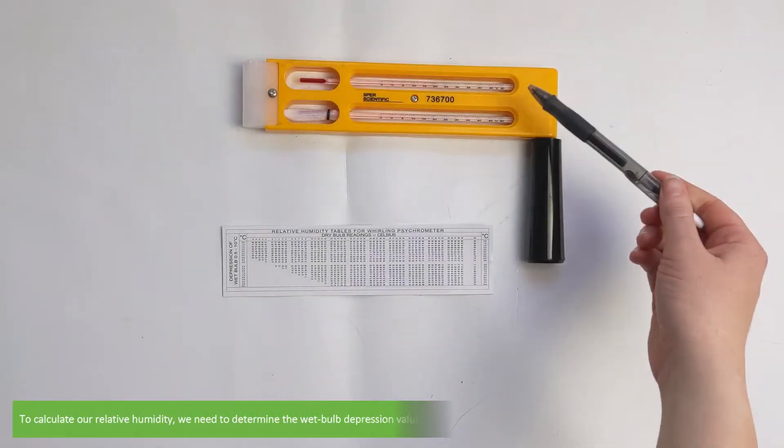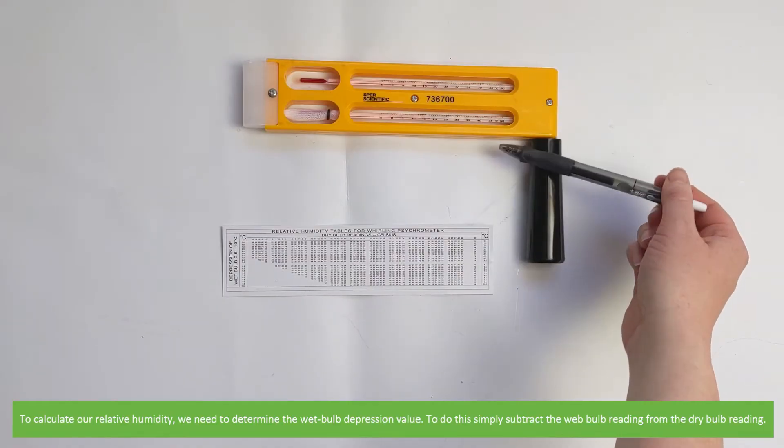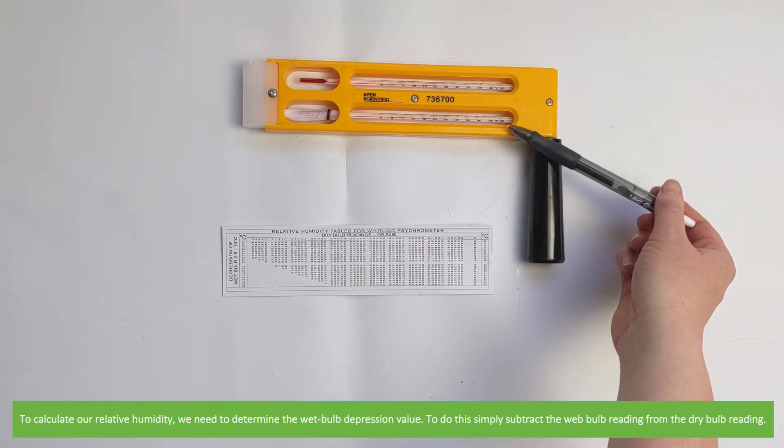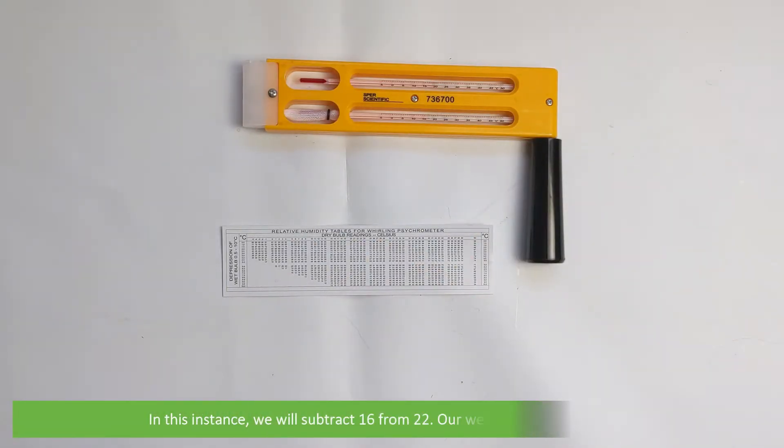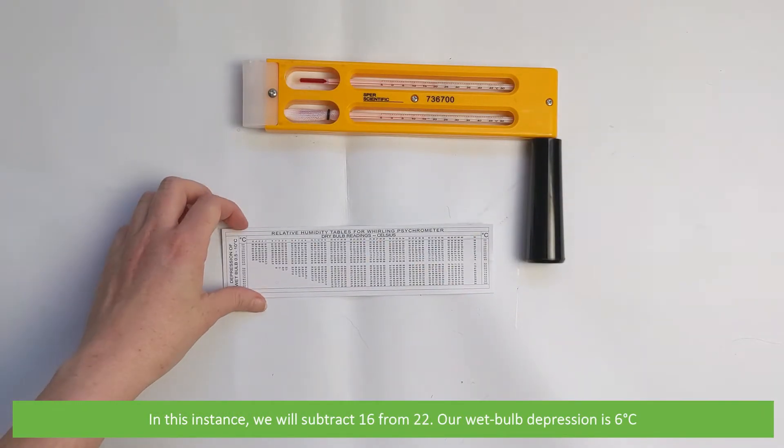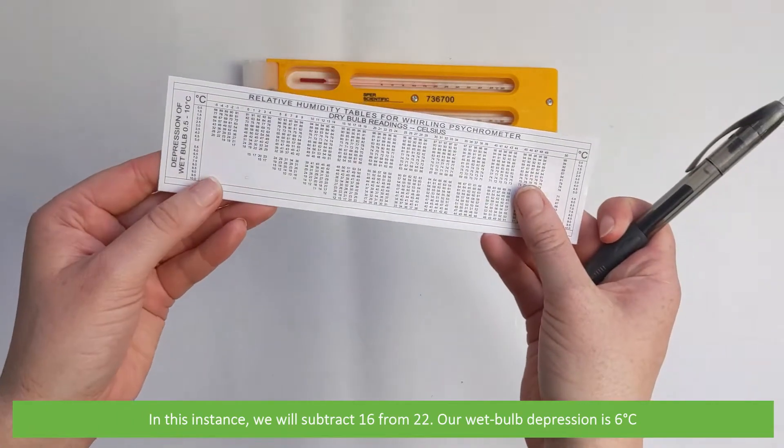To calculate our relative humidity, we need to determine the wet bulb depression value. To do this, simply subtract the wet bulb reading from the dry bulb reading. So in this instance we will subtract 16 from 22. Our wet bulb depression is 6 degrees Celsius.